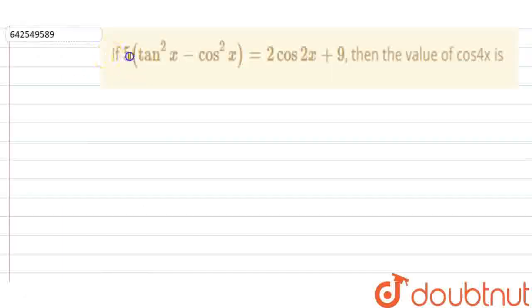So our question is, if 5 into tan square x minus cos square x is equal to 2 cos 2x plus 9, then the value of cos 4x is.